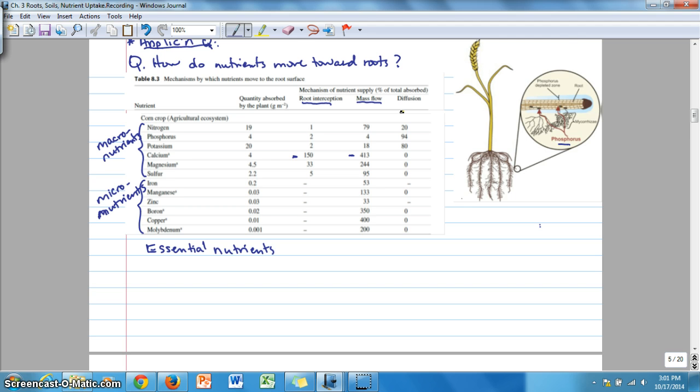Mass flow is essentially bulk flow. Root interception is a relatively low form of nutrient availability. The next was mass flow, and mass flow is essentially bulk flow, meaning that it contains water containing nutrients that are dissolved in the water, and as the water moves down its own potential gradient, water potential gradient, it moves towards the roots. Those nutrients are then able to be taken up by the plant, and the requirement here is that the nutrient has to be soluble in water.